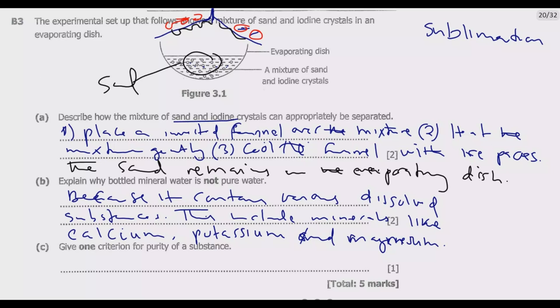Question (c): Give one criterion for purity of a substance. One criterion for purity of substance is that it has a specific and sharp melting or boiling point.